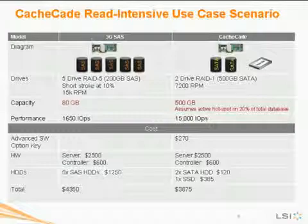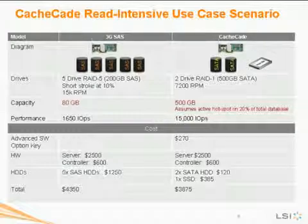If you want to take this one step further and see what it would take for a 3-Gig SAS configuration without Cascade to meet the same 15,000 IOPS performance number, we'll move to the next slide.